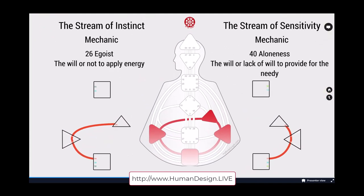Remember where we have this stream of instinct. This is the mechanical expression here of the egoist, the will or not to apply energy. And we have the stream of sensitivity where we have the mechanism or mechanic of aloneness, the will or lack of will to provide for the needy. Both of these are feeding up into that 21, that 21 being able to control how and when the timing of the resources reach out into the material world. Here's who holds the purse strings.